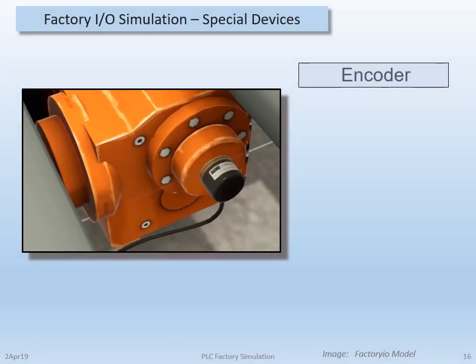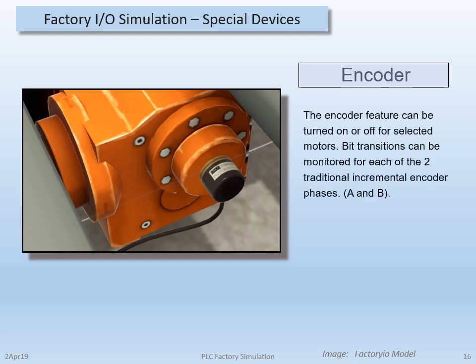Also a recent addition is the encoder feature. This encoder can be enabled in any of the motors. The output is simply an on-off transition for each of the two traditional incremental encoder phases. This creates an opportunity to discuss the original encoder design as opposed to current applied serial, parallel, Ethernet, or other types of communication technology.